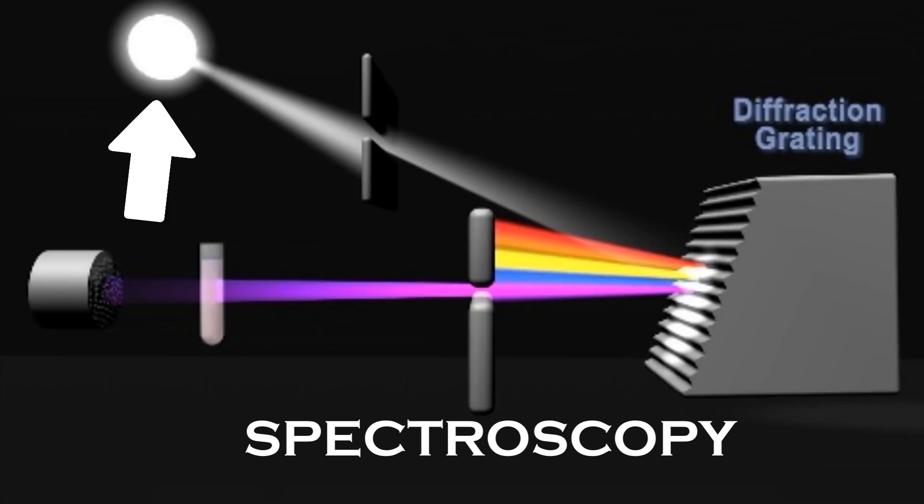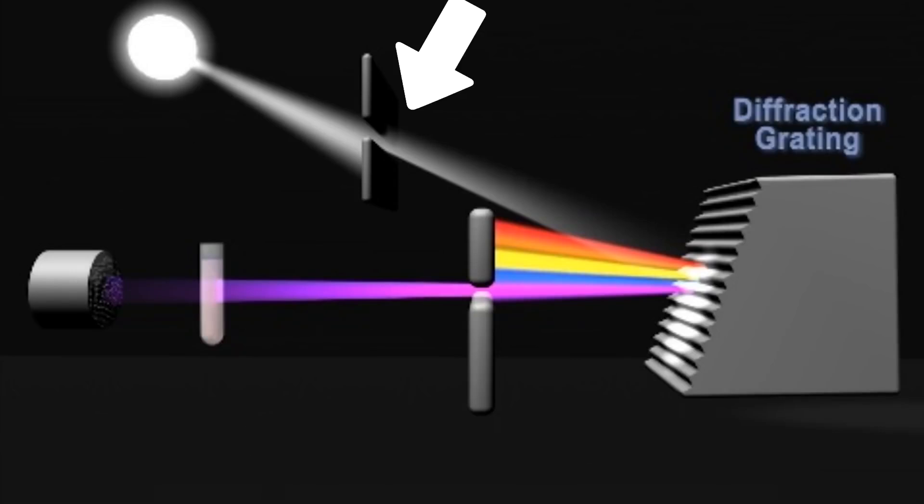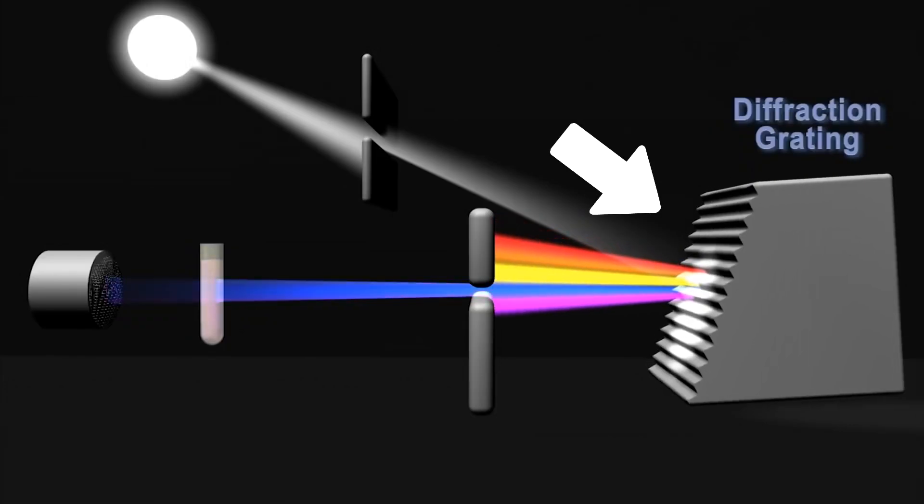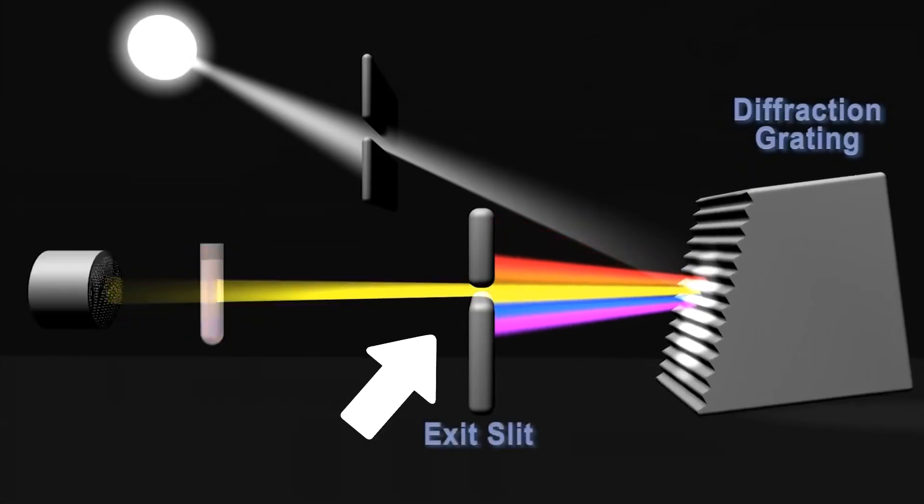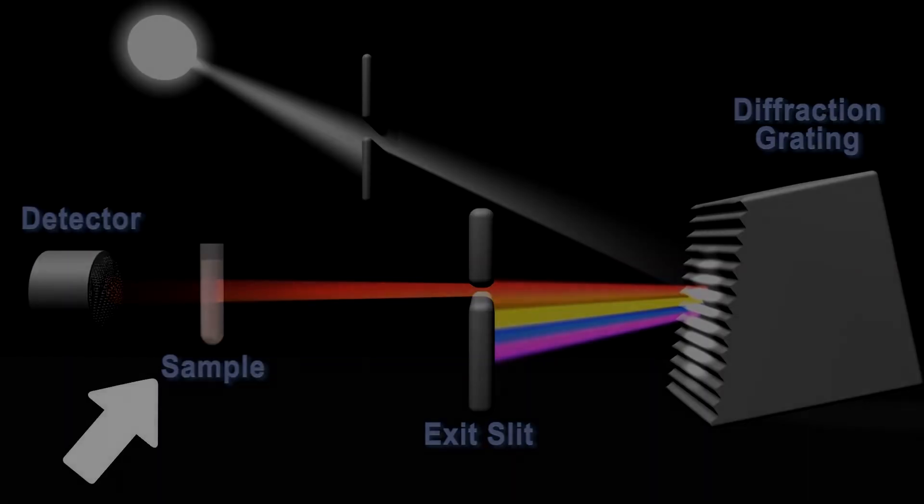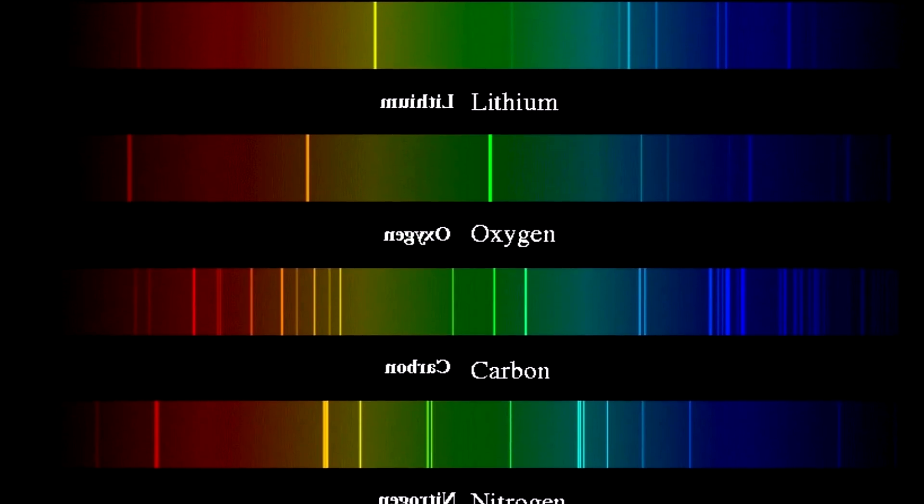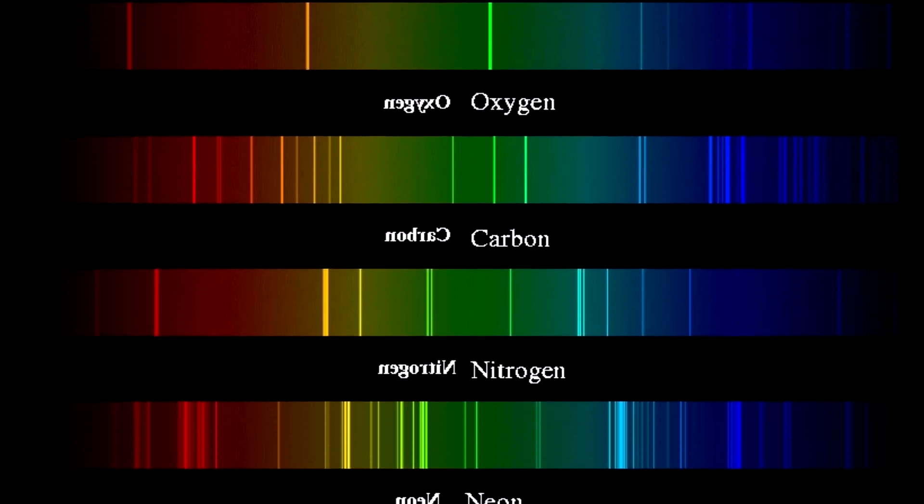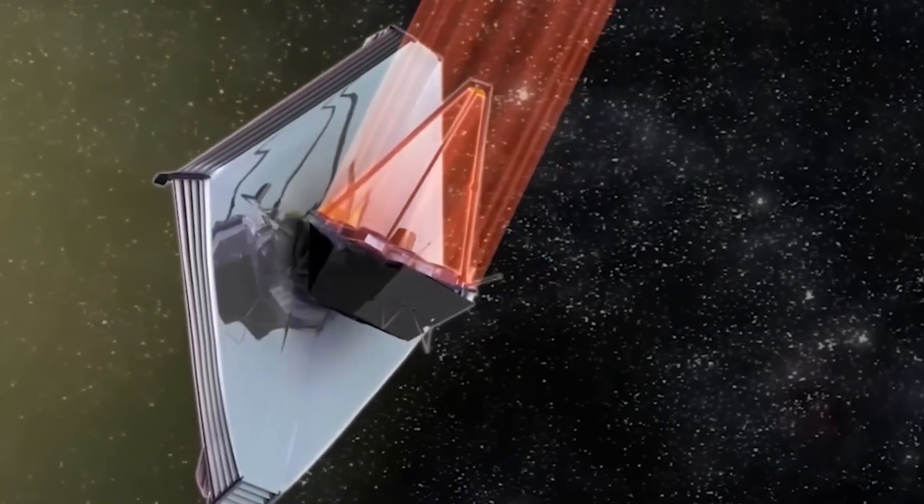Spectroscopy is another technique for searching for exoplanets. Scientists analyze the light emitted by stars after passing through a planet's atmosphere. This process breaks the light into its components as if it were passing through a prism, providing information about the chemicals present in the atmosphere.